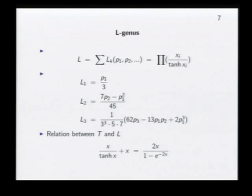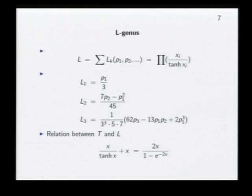Besides the Todd genus, Hirzebruch discovered what he called the L-genus, defined in terms of the generating function involving x over tan(x), very closely related to the Todd genus generating function by a simple trigonometric formula. This was introduced to get the formula for the signature of a 4k-dimensional manifold. As soon as Thom's cobordism theory was developed, he immediately got the proof of these formulas. Because of the relationship between the L-genus and the Todd genus, he realized it was not too far to reach the Riemann-Roch theorem, and after a great tour de force, he succeeded.